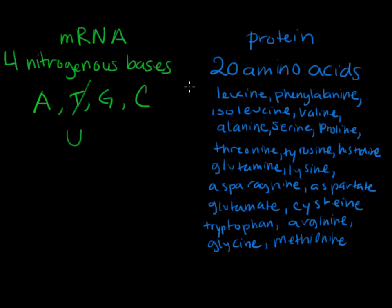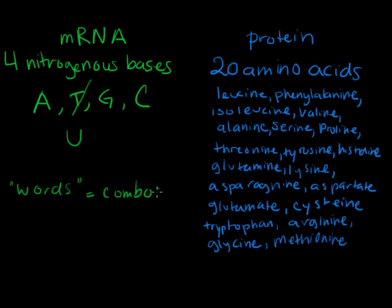We need at least 20 unique codes so that we can code for each amino acid. Think about the English language — we have 26 letters, but we have more than 26 words and more than 26 meanings. How do we do that? We make combinations of letters — basically words — which are just combinations of letters, and that gives us many more possible meanings.